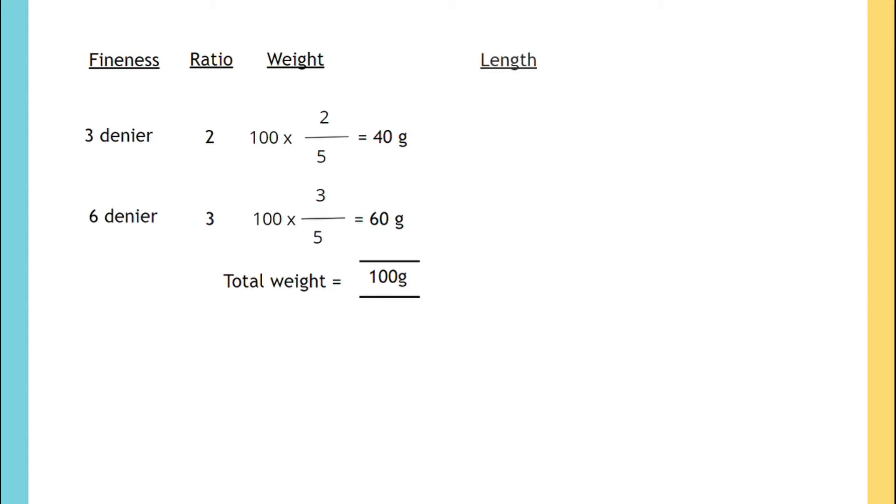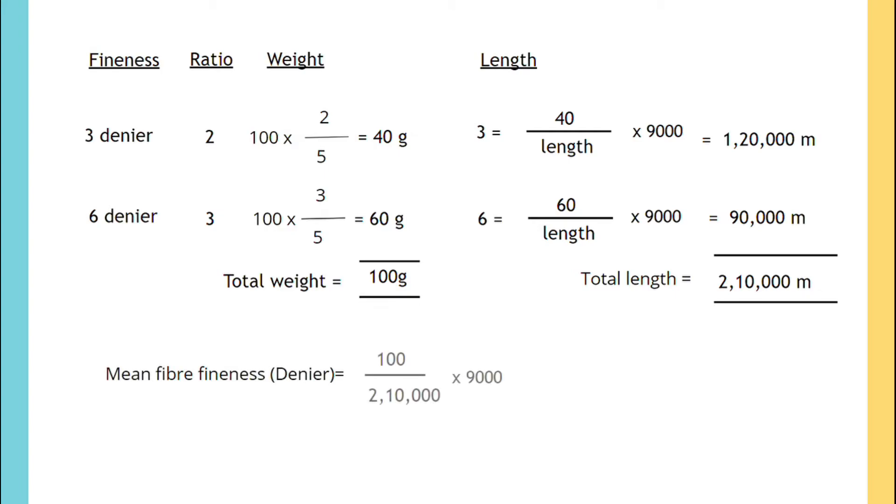So length we have to find with the given data as 40 grams and 3 denier. Substituting in the denier formula we will arrive length as 120,000 meters. Similarly substituting 60 grams and 6 denier we will arrive 90,000 meters. So totally 210,000 meters. Substituting this total weight and total length in the denier formula we will arrive the answer as 4.28.